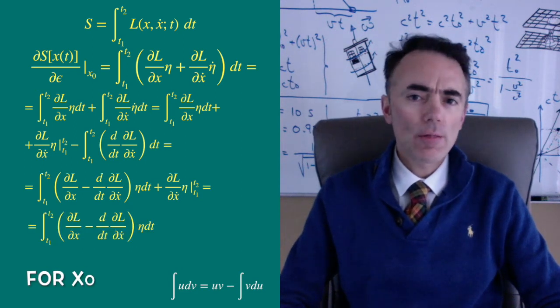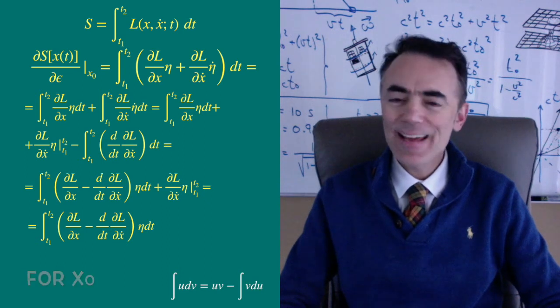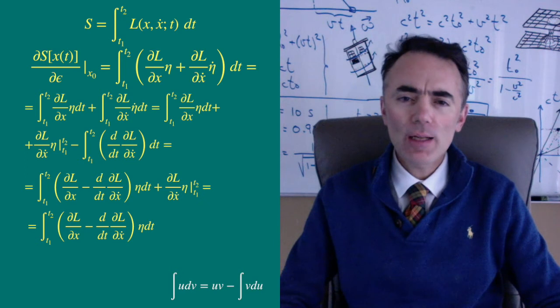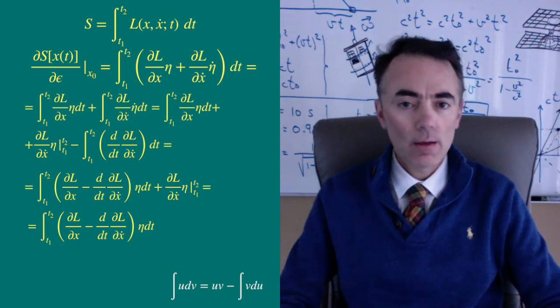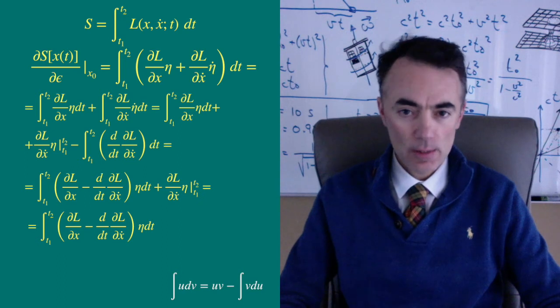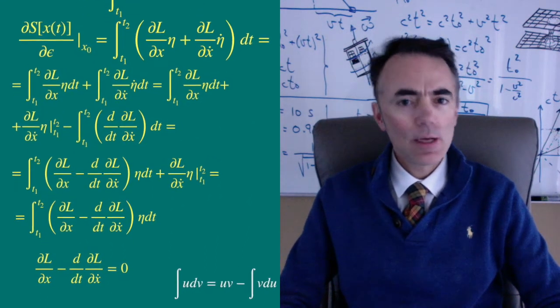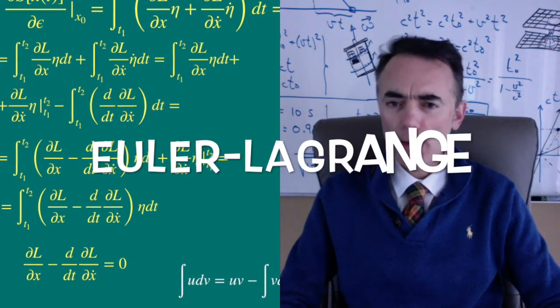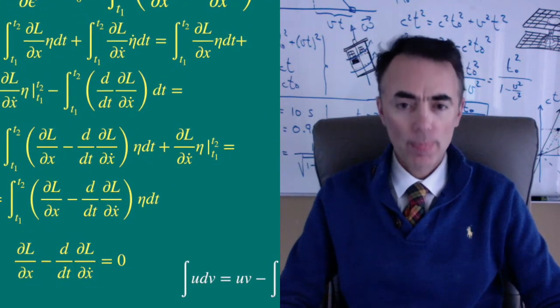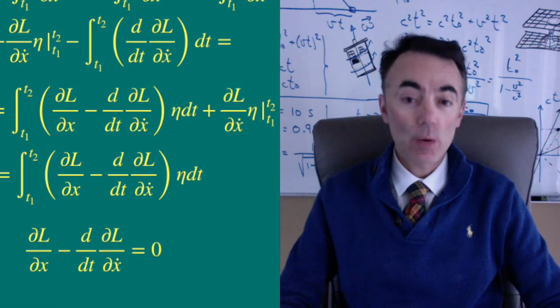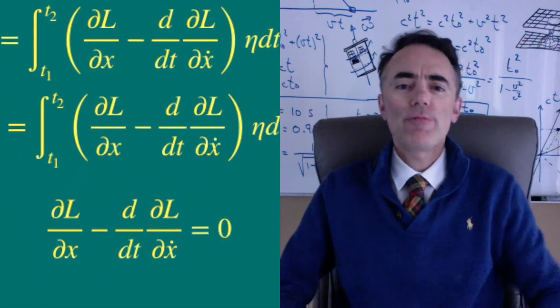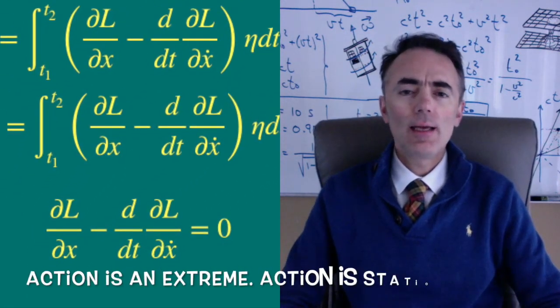Because for x0 this has to be 0 and eta is an arbitrary function, it has to be valid for any fancy eta you think of. Then the integrand has to be 0 itself. And this, my friends, yields Euler-Lagrange's equation.